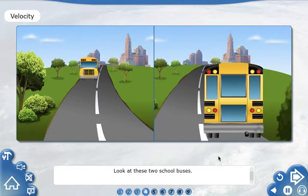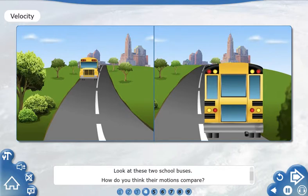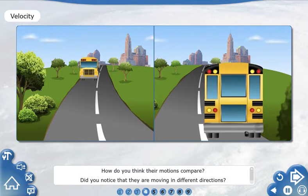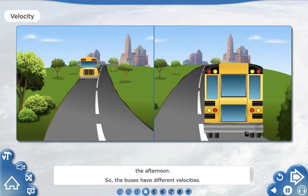Look at these two school buses. How do you think their motions compare? Did you notice that they are moving in different directions? One bus is going to school in the morning, and the other is coming home in the afternoon. So the buses have different velocities.